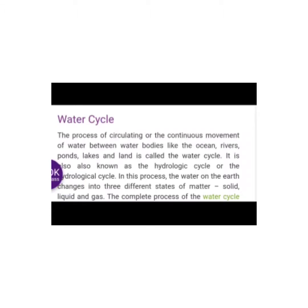Now, the water cycle. What is the water cycle? The process of continuous circulation and movement of water between water bodies like the ocean, rivers, ponds, lakes, and land is called the water cycle.